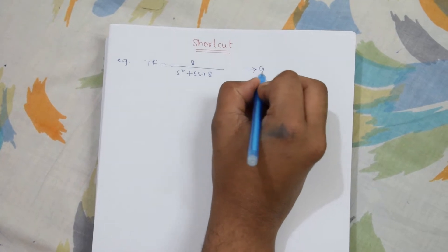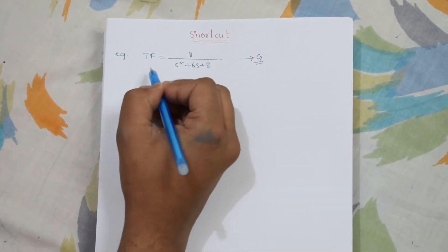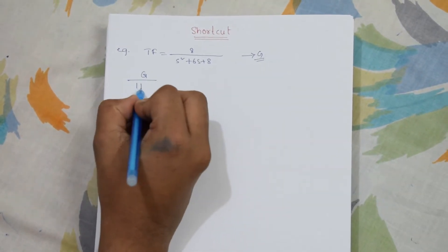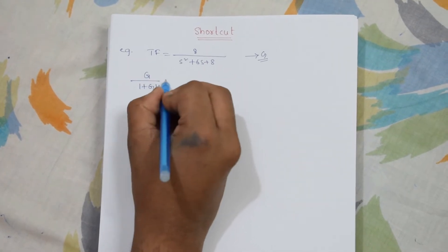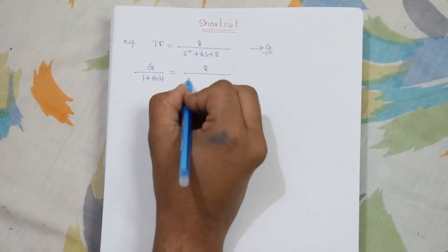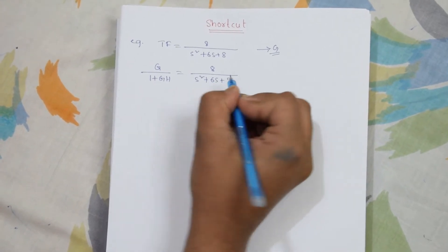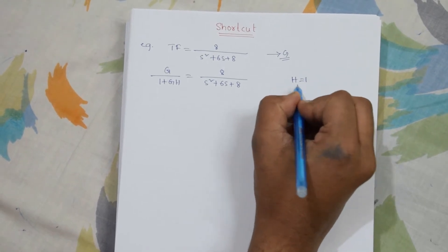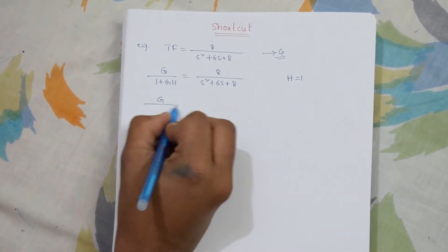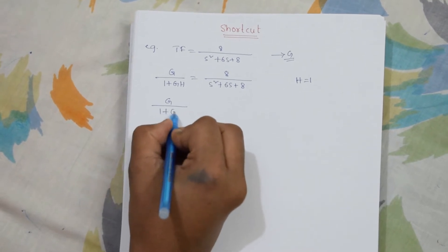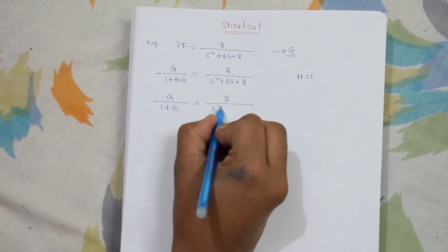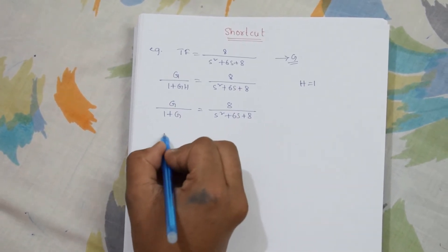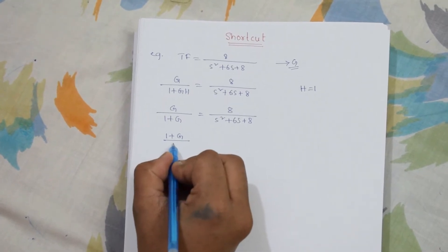We know that our open loop transfer function is G, and we also know that the formula for closed loop transfer function is G by 1 plus GH. So this equals 8 by s squared plus 6s plus 8. Here we will consider H equals 1, so this will be G by 1 plus G equal to 8 by s squared plus 6s plus 8.